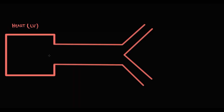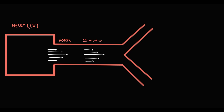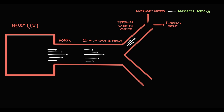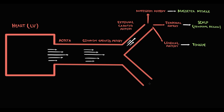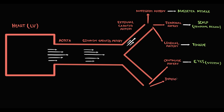To understand the consequences, let's review how blood supply works. The heart pushes blood into the aorta, from the aorta into the common carotid artery, and from there into the external carotid artery. The external carotid artery has branches: the maxillary artery supplying blood to the masseter muscle, the temporal artery supplying blood to the scalp especially the temporal region, and the lingual artery supplying blood to the tongue. From the common carotid artery, blood also moves into the internal carotid artery, which has branches: the ophthalmic artery delivering blood to the eyes, the inferolateral trunk supplying cranial nerves, and cerebral arteries supplying brain tissue.